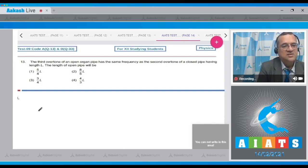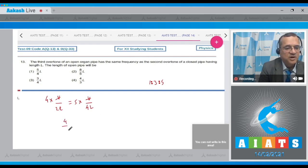The third overtone is fourth harmonic: 4 into V divided by 2 L. This is equal to the second overtone in closed pipe, which is the fifth harmonic: 5 times the fundamental, V by 4 L. V cancels with V. Therefore 4 upon 2 L is equal to 5 by 4 L, and L is equal to 8 by 5 of capital L.